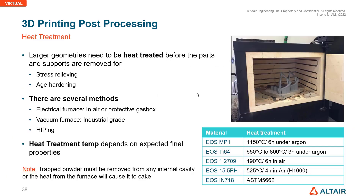There are several methods to perform heat treatment, including using an electrical furnace or vacuum furnace. Heat treatment temperature depends on the expected final material properties. Suggested materials and their corresponding heat treatment temperatures are provided in the reference table.